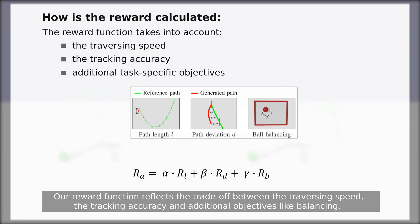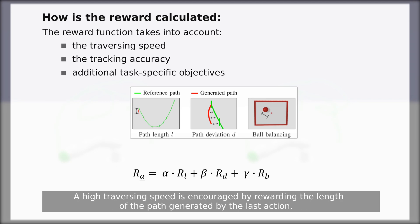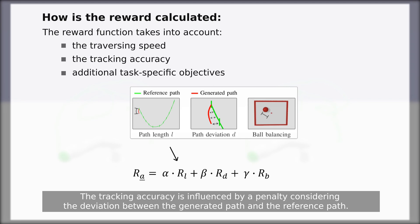Our reward function reflects the trade-off between the traversing speed, the tracking accuracy and additional objectives like balancing. A high traversing speed is encouraged by rewarding the length of the path generated by the last action. The tracking accuracy is influenced by a penalty considering the deviation between the generated path and the reference path.